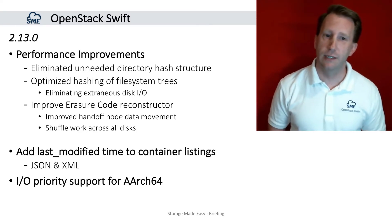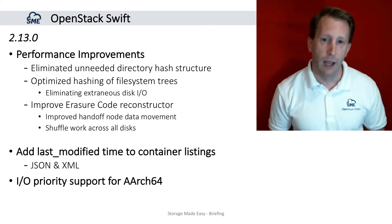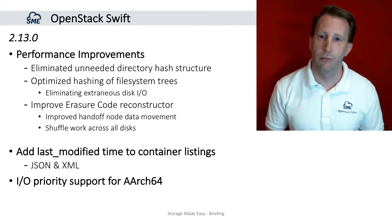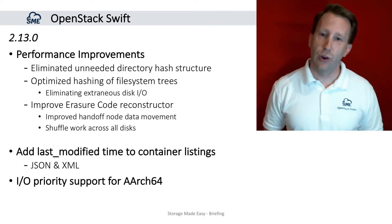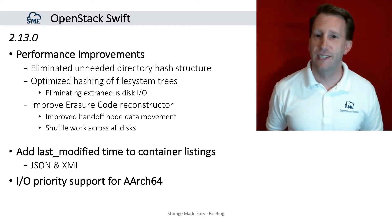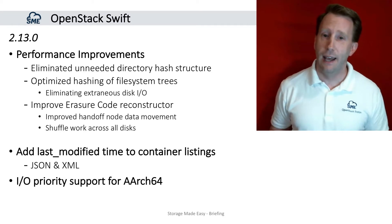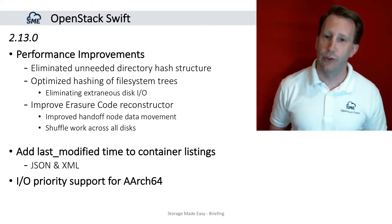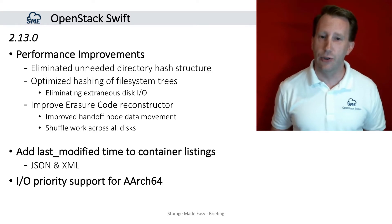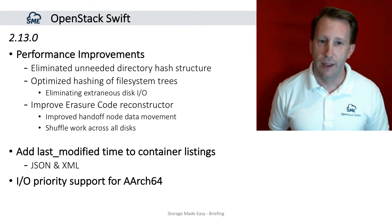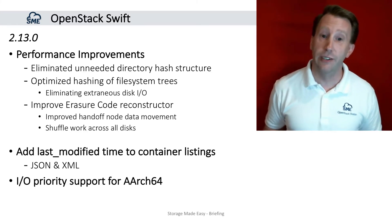2.13 focuses on performance improvements. OpenStack Swift uses XFS as the underlying default file system for the drives. As drives continue to increase in size from the original release with 2TB drives to today's 10TB drives and growing, it's important to optimize the directory hash structure. Performance improvements have been made by both eliminating unneeded directory hashes and optimizing the current file system trees, which eliminates IOPs from the drives, thus improving performance.